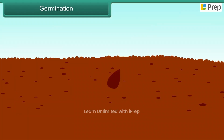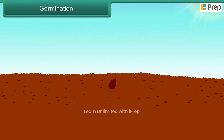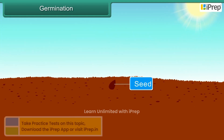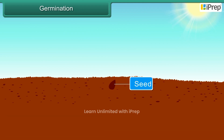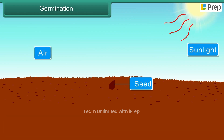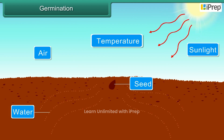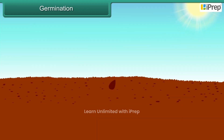The process of growth of the embryo plant inside the seed is known as germination. A seed requires a proper amount of air, sunlight, temperature, and water to grow into a seedling. As the embryo starts to develop, the seed coat breaks open and a root, or radicle, emerges.